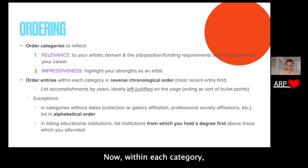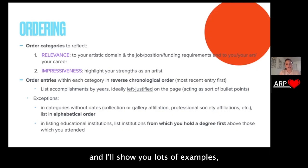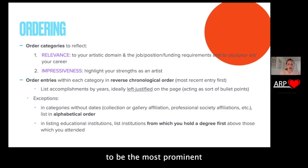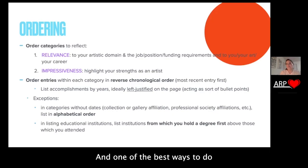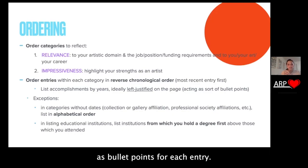Now within each category, you would order entries in reverse chronological order, starting with the most recent entry first. I'll talk about formatting more and show you lots of examples. But I love for the year to be the most prominent thing on the page. One of the best ways to do that is to left-justify your years on the left side of the page, so that they sort of act as bullet points for each entry.